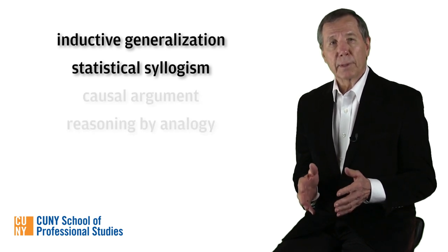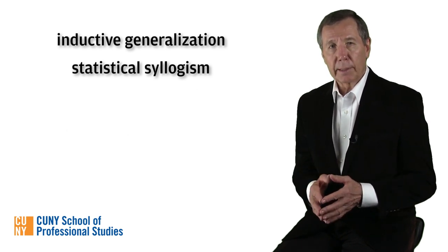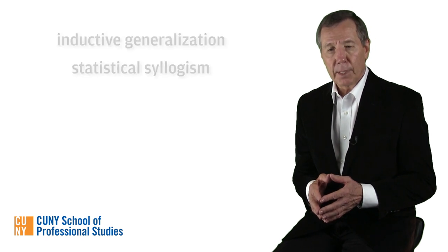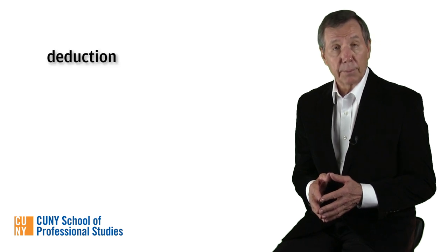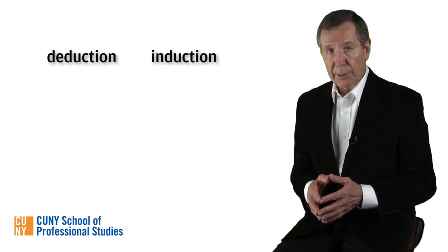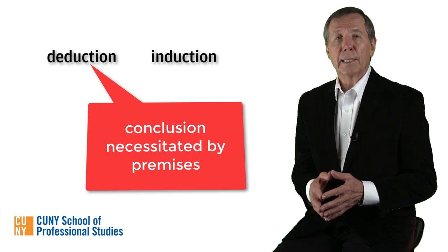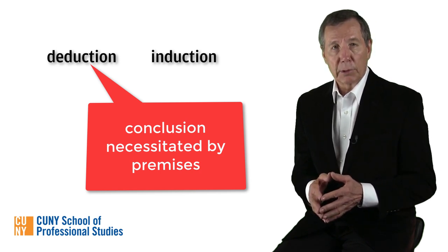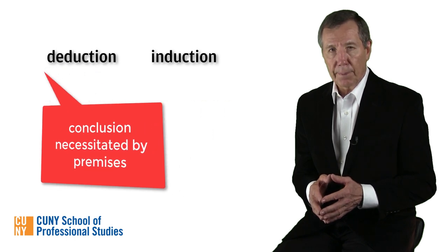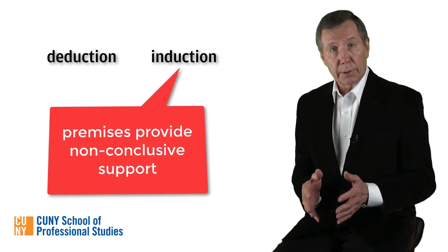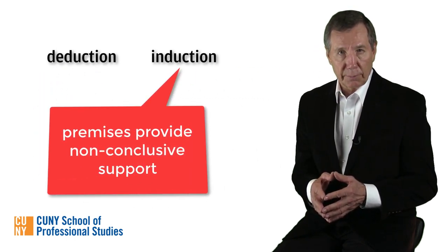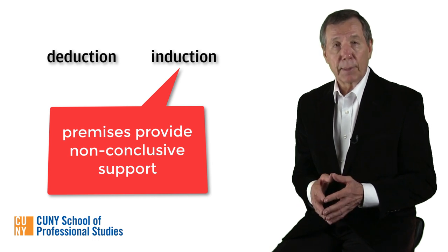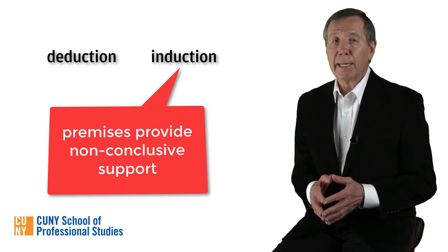Let's start with inductive generalization and statistical syllogism. We've said from the outset that there are just two types of inference: deduction and induction. The conclusion of a deduction is a necessary outcome of the form of the premises, which provide conclusive support. In an induction, the support is non-conclusive, so the conclusion is at best probable or likely and never necessary.